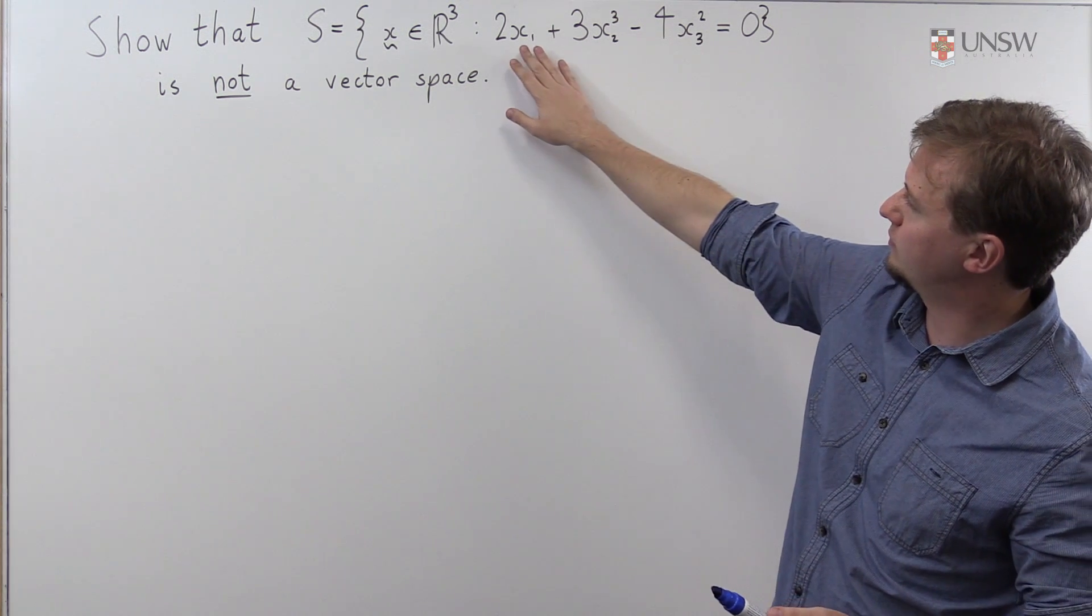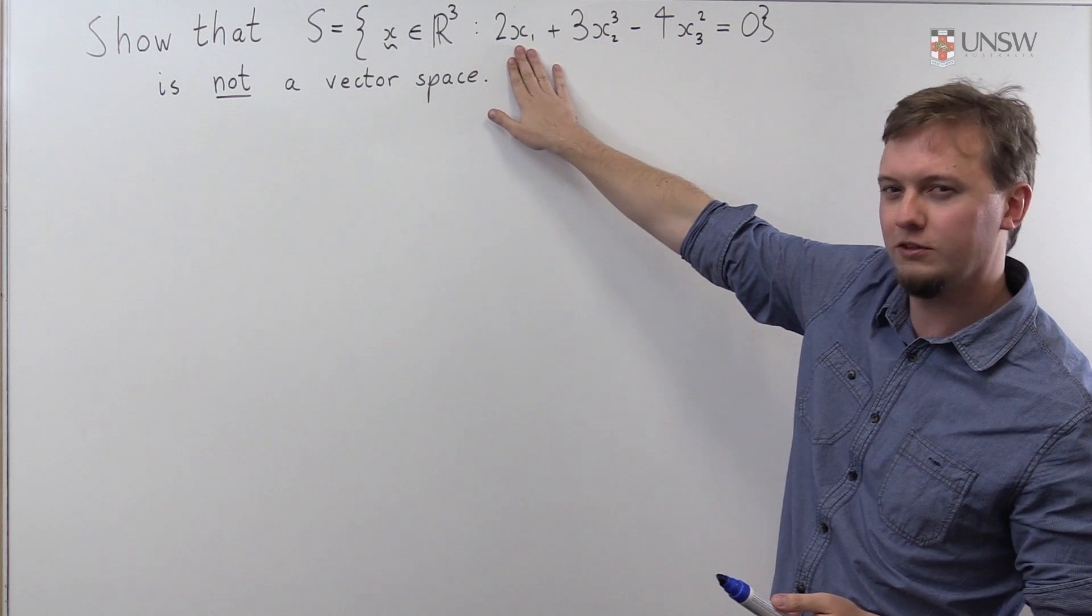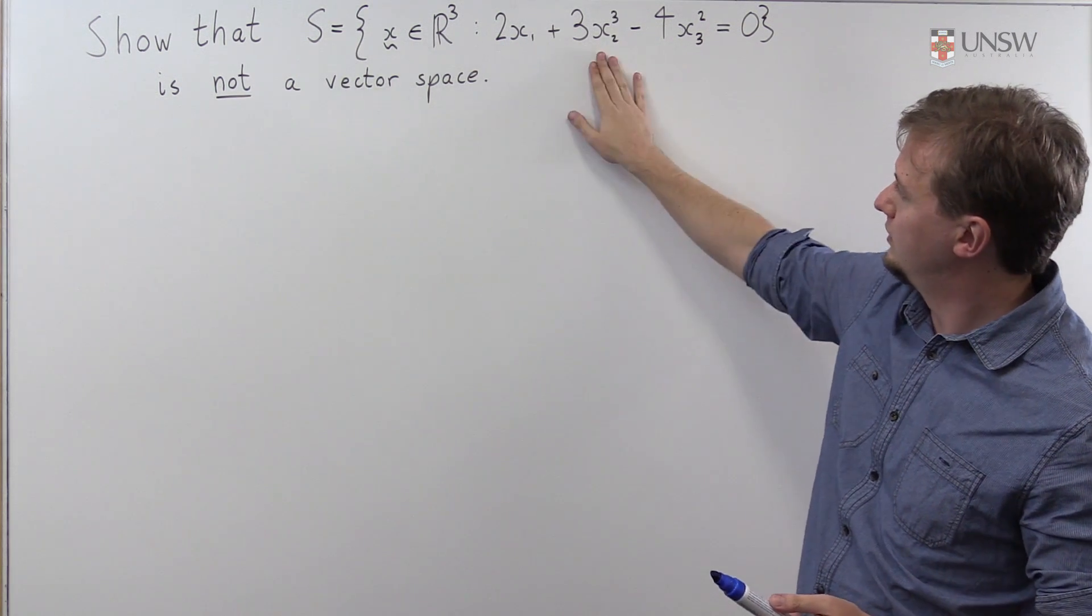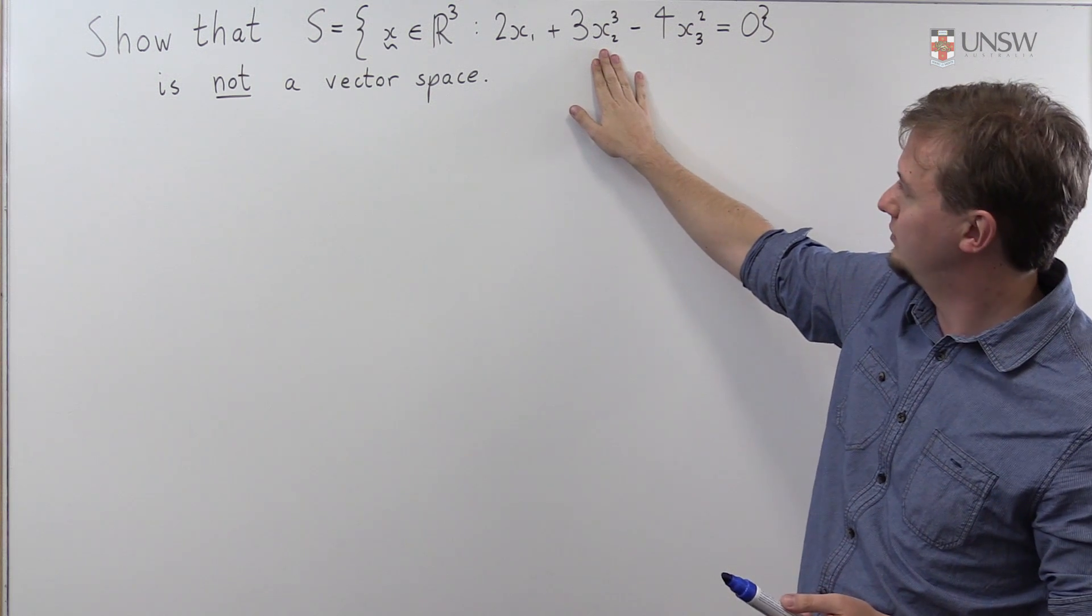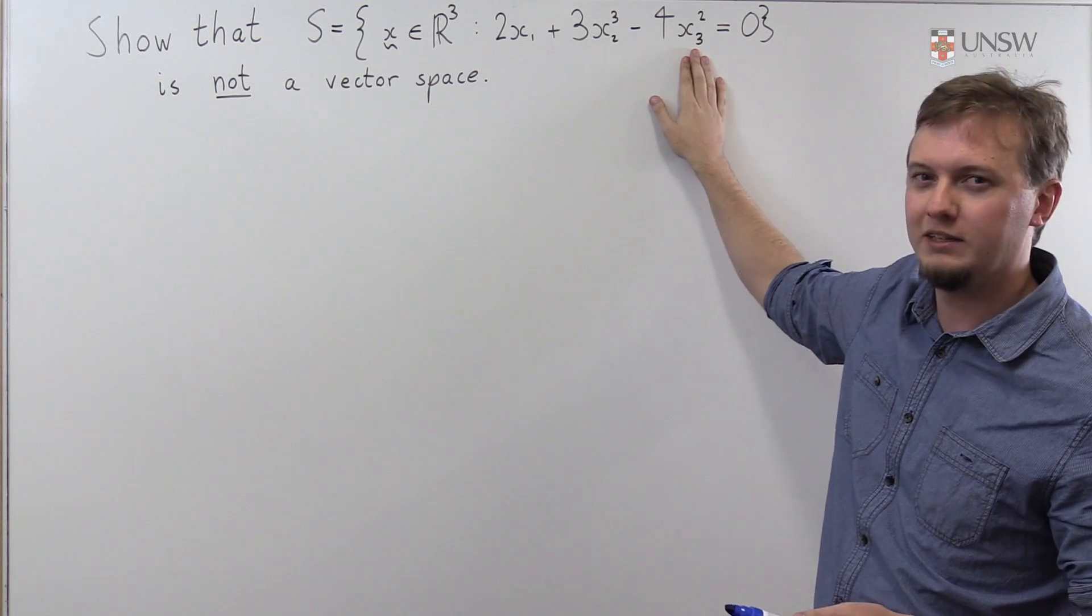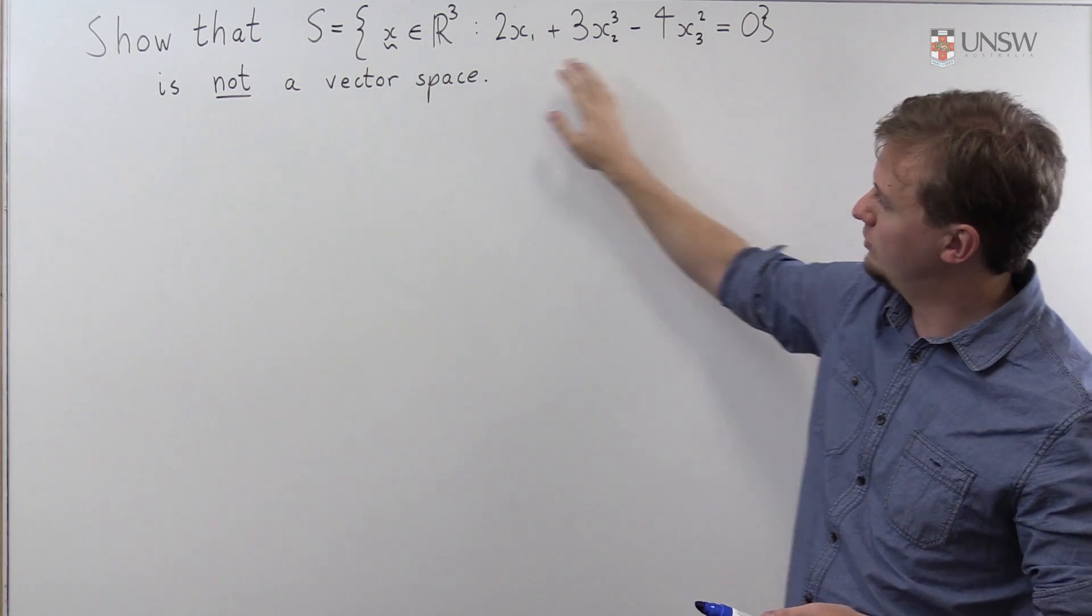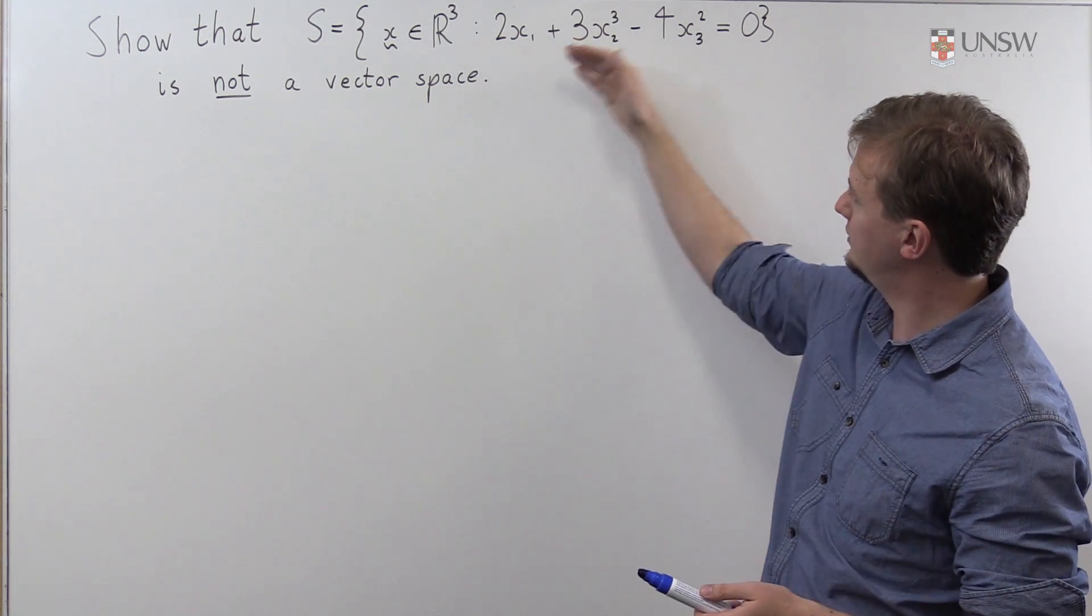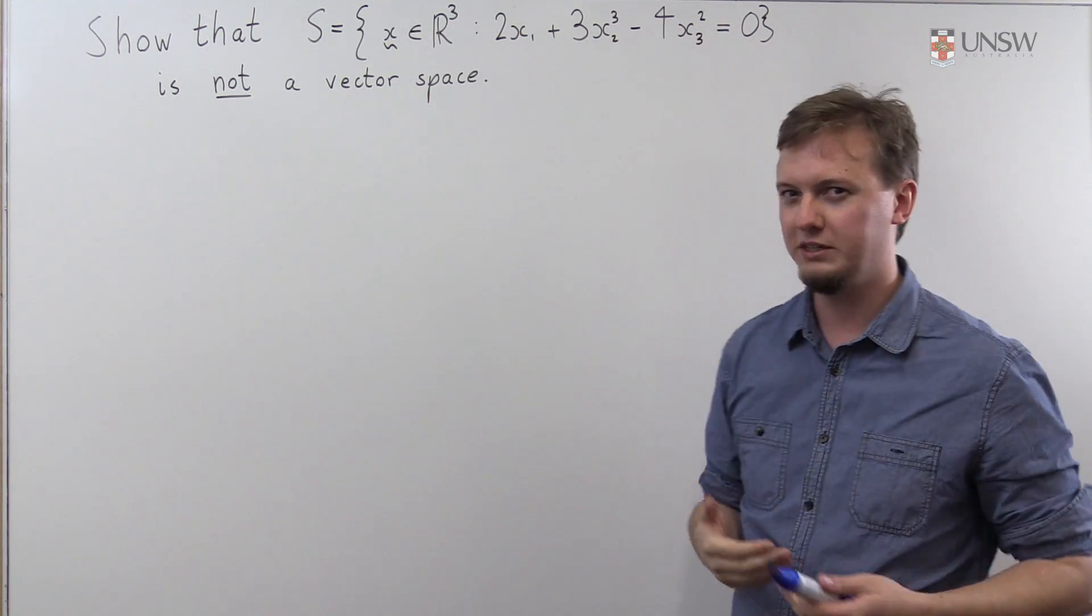Now let's just take a look at this equation. If you take a look at this term here, this term is linear in x₁. This term here is cubic in x₂, and this term is quadratic in x₃. So if I scale the original vector by some scalar, then each of these terms will scale by a different factor.